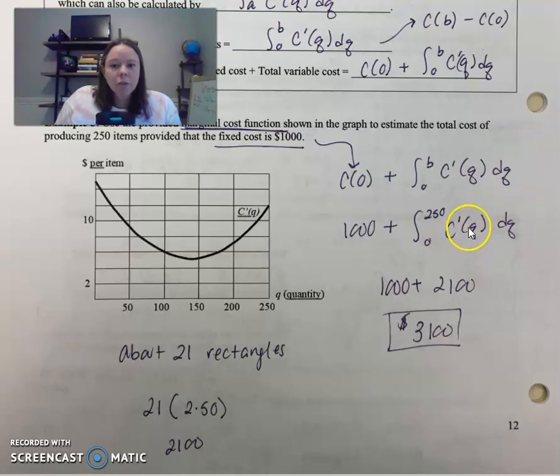So see how the items cancel and you're left with just the dollar amount plus, and then that thousand dollars is also in terms of dollars. So that's a good way of checking yourself to make sure you're adding the same units. Dollars plus dollars. We're good to go.